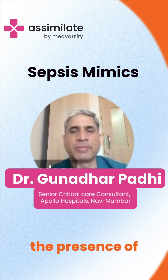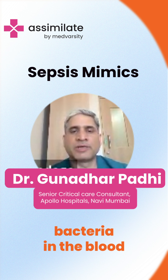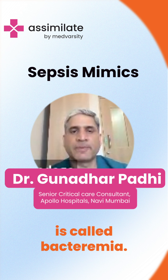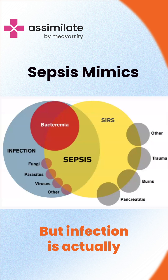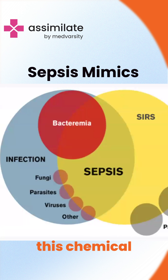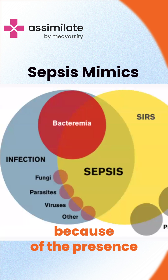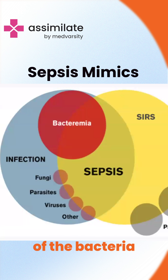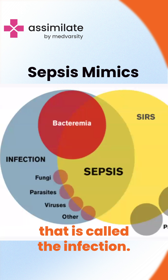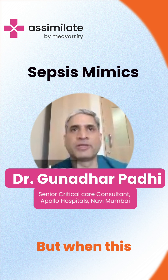The presence of bacteria in the blood is called bacteremia, but infection is actually the chemical reaction which happens in the body because of the presence of the bacteria — that is called the infection.